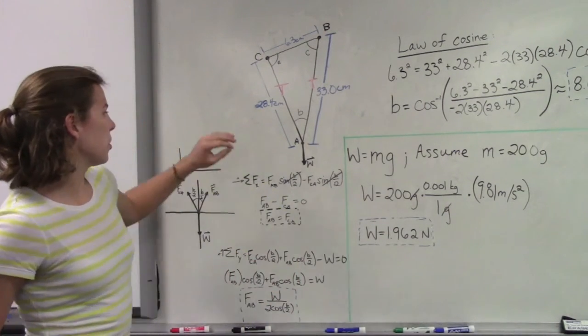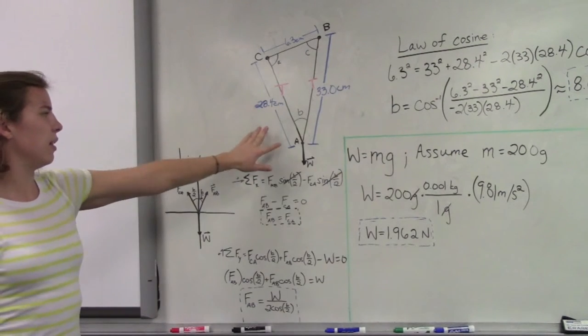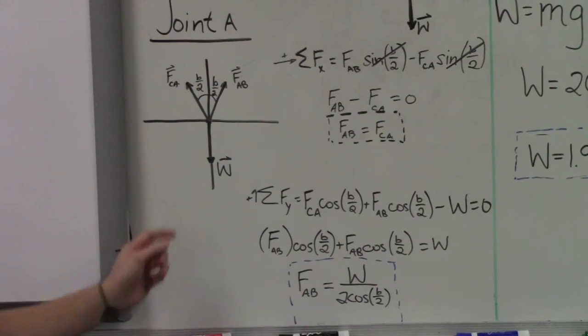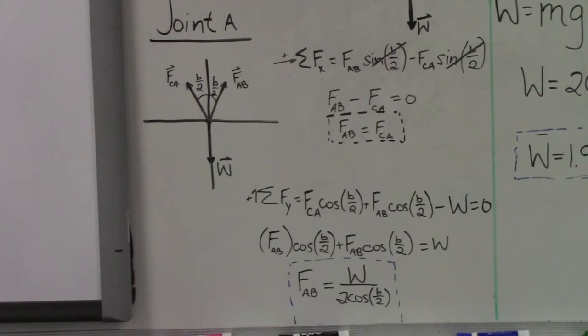And from that joint, we know that there are three forces acting: the weight in the negative y direction, and then a force CA and a force AB with, just keep in mind, force AB is what we knew we needed to solve for.